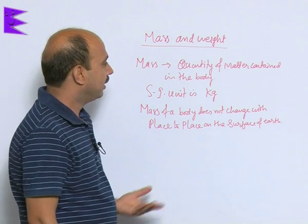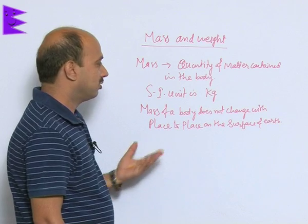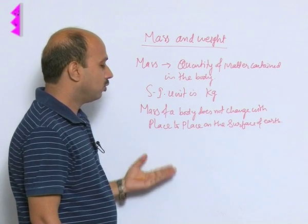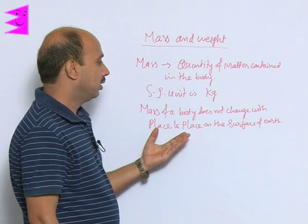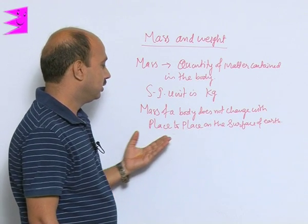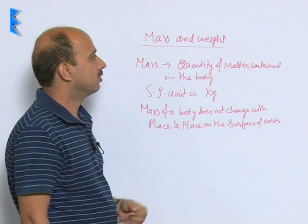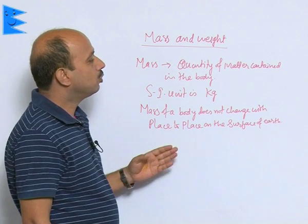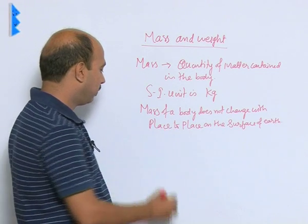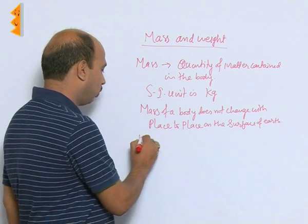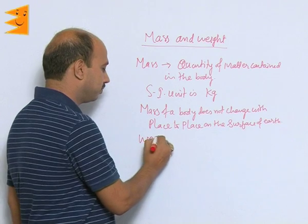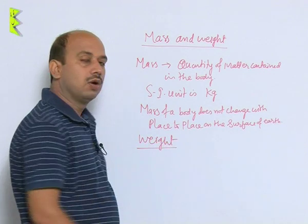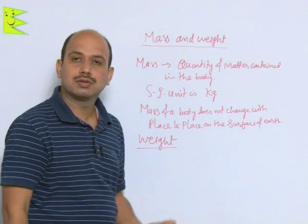The quantity of matter contained in the body, SI unit is kg, and mass of a body does not change with place to place on the surface of earth. Now we will come to the next part, that is called weight. What is weight?